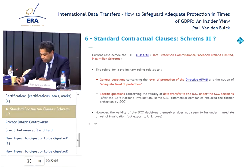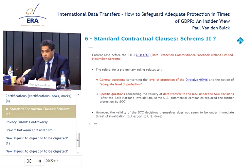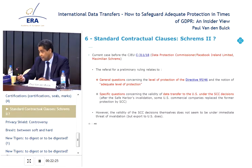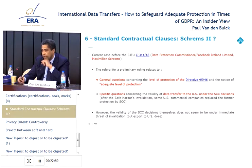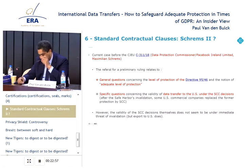In short, the thesis of Max Schrems — here under the directive but remaining valid under the GDPR — is that the condition of enforceable rights and effective legal remedies is not guaranteed by the U.S. when using standard contractual clauses. So it's basically a review of the U.S. legal system. I don't believe the validity of the standard contractual clauses as such is under threat, but the export to the U.S. via standard contractual clauses is, I believe, under threat.